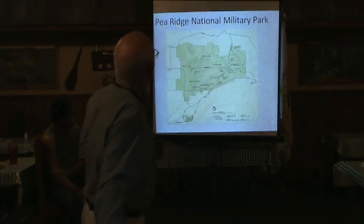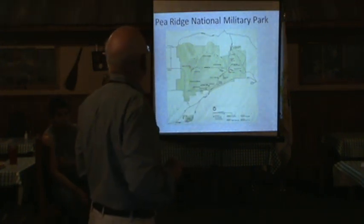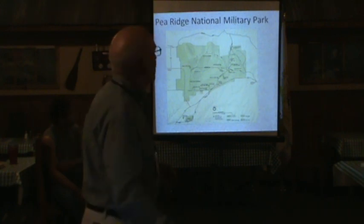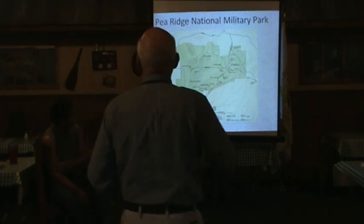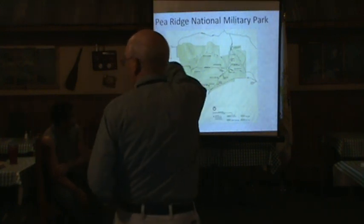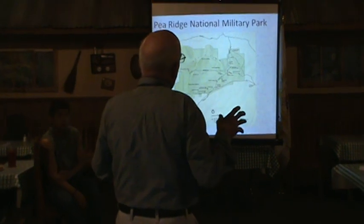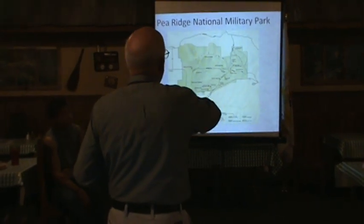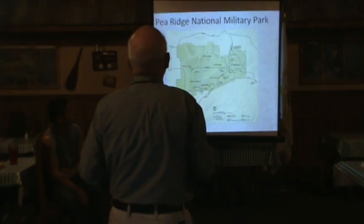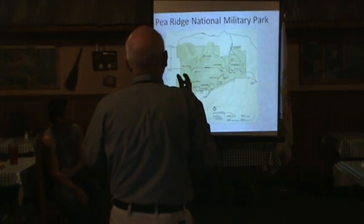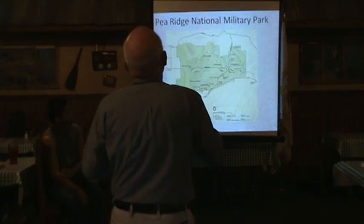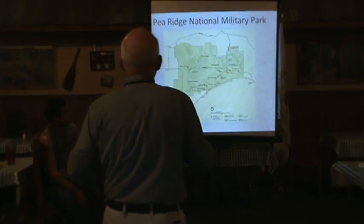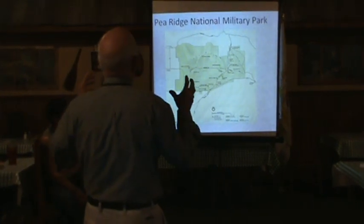I'll bring up the part of Arkansas that it's in. If you see at the top of the map, you'll see the name Pea Ridge. What that is is a rock formation that runs for maybe five miles or so, and it's very rugged. In the prosecution of the battle, the forces had to split around it — they could not bring themselves to bear.